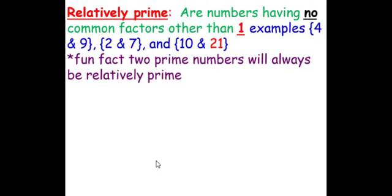Relatively prime are numbers having no common factors other than 1. Examples: 4 and 9, 2 and 7, and 10 and 21. Fun fact: 2 prime numbers will always be relatively prime.